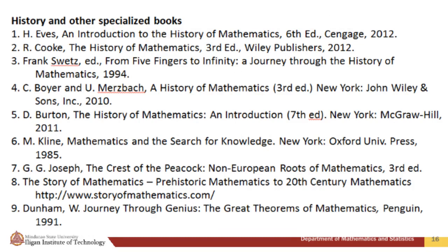Other book references include history and specialized books: Eves, An Introduction to the History of Mathematics, 6th ed., Cengage, 2012; Cook, The History of Mathematics, 3rd ed., Wiley Publishers, 2012; Frank Sweets, ed., From Five Fingers to Infinity: A Journey Through the History of Mathematics, 1994; Boyer and Mertzbach, A History of Mathematics, 3rd ed., John Wiley and Sons, 2010; Burton, The History of Mathematics: An Introduction, 7th ed., McGraw-Hill, 2011.